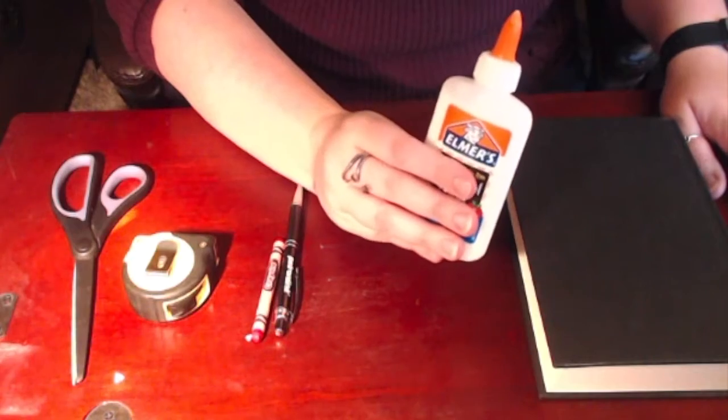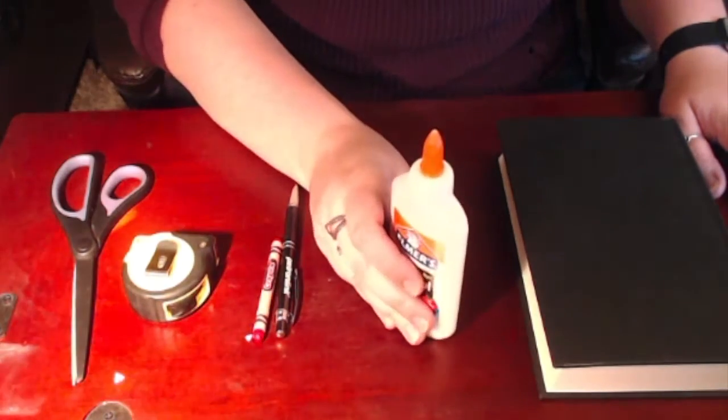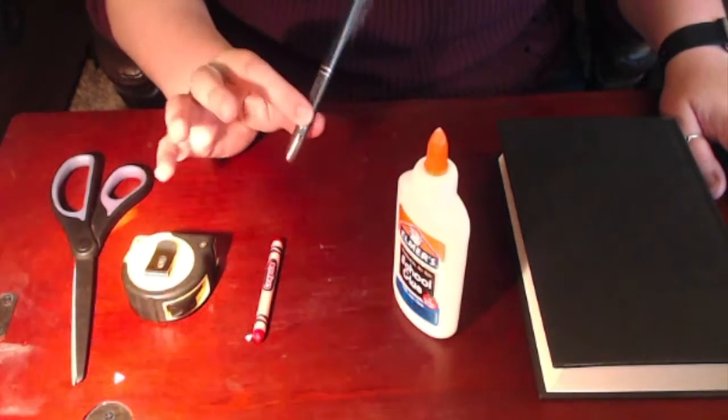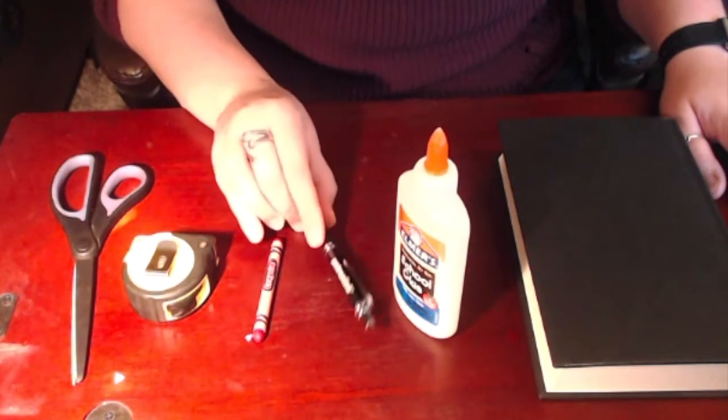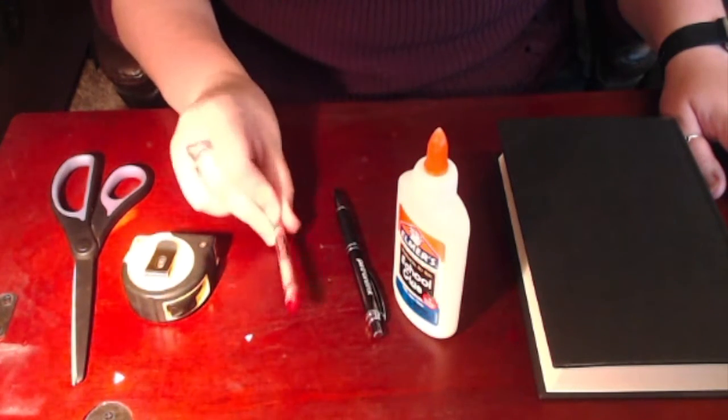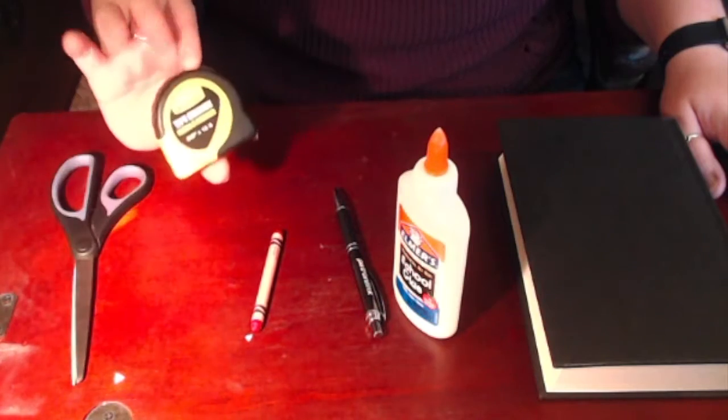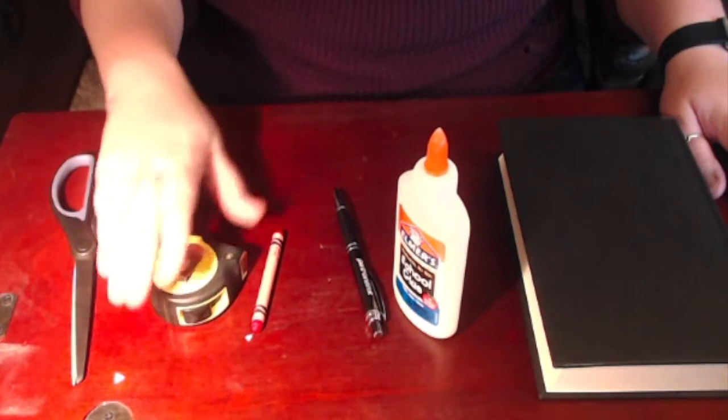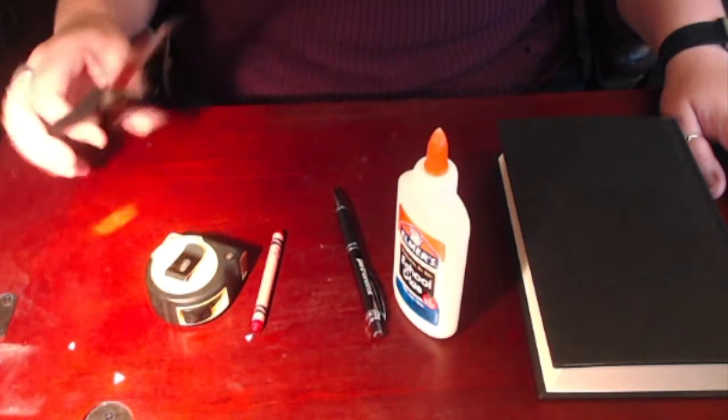You'll need a book, some glue—they mention hot glue in the original instructions but use what you've got—a pen, a crayon or marker if you want to add a little color, a tape measure (a ruler's preferable), and some scissors.